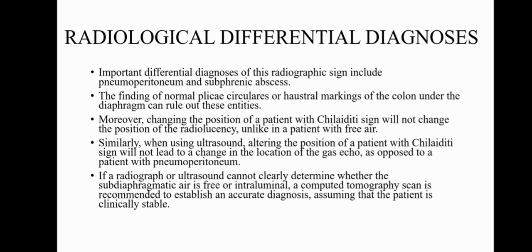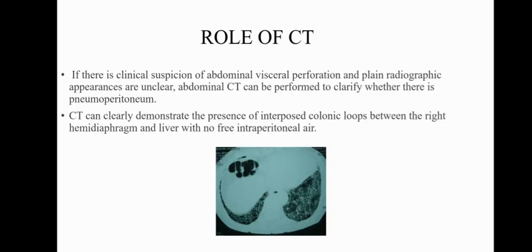If a radiograph or ultrasound cannot clearly determine whether the subdiaphragmatic air is free or intraluminal, a CT scan is recommended to establish an accurate diagnosis, assuming that the patient is clinically stable. If there is clinical suspicion of abdominal visceral perforation and plain radiographic appearances are unclear, abdominal CT can be performed to clarify whether there is pneumoperitoneum. CT can clearly demonstrate the presence of interposed colonic loops between the right hemidiaphragm and the liver with no free intraperitoneal air, thus ruling out true pneumoperitoneum and confirming the diagnosis of pseudopneumoperitoneum. Here in this CT image we can see the loops of bowel present just superior to the liver and underneath the diaphragm.